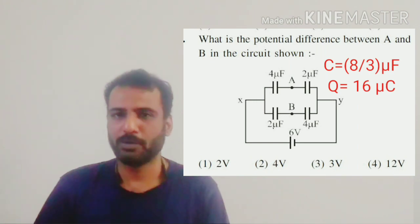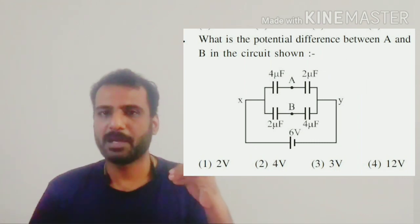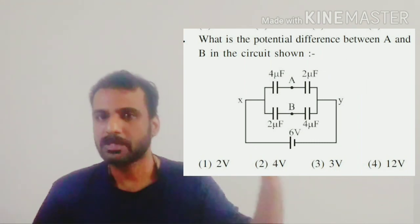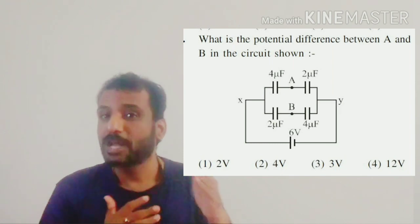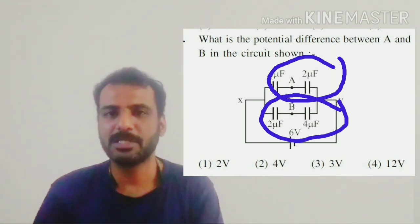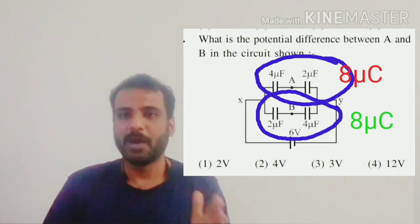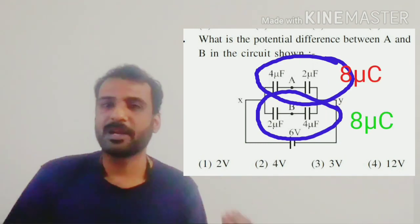Now the total charge from the cell is going into two branches which are similar. 2, 4 and 4, 2 they are similar and hence the total charge is getting divided equally. So it becomes 8 and 8. The charge on both capacitors are 8.